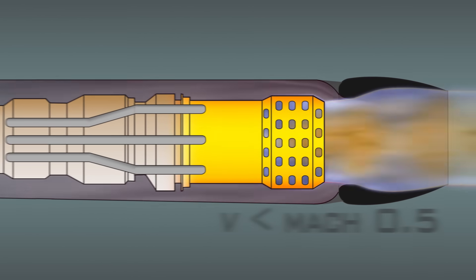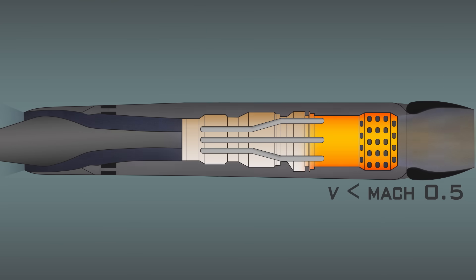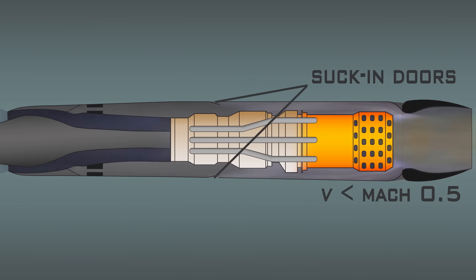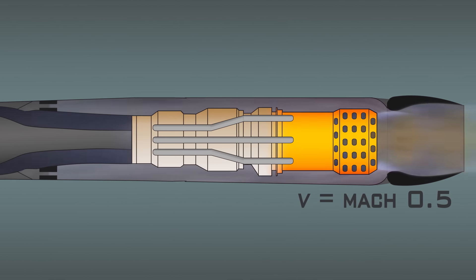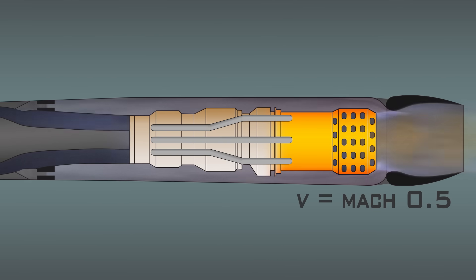At speeds below Mach 0.5, not enough air is coming through the inlet for cooling, so more air comes in through suck-in doors that are positioned midway along the nacelle. These close at Mach 0.5, which the plane only hits just after takeoff and just before landing.